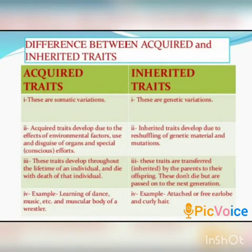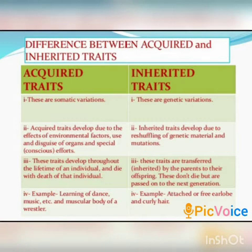Dear children, our portions are almost completed. A small portion remaining is the difference between acquired traits and inherited traits. You know that you got some characters from your parents. Those characters are actually controlled by the genes, and they are inherited from your parents. It may be the color, skin color, eye color, shape of the nose, or anything. Such characters are called inherited traits.